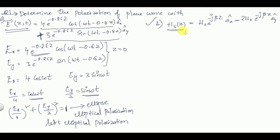Now come to question (b). Here the magnetic field is given, so first the magnetic field must be converted to electric field, because polarization is the orientation of the electric field — we can only comment on polarization using the electric field. The wave is traveling along the z-direction. The formula for intrinsic impedance gives E_x / H_y = η and −E_y / H_x = η.